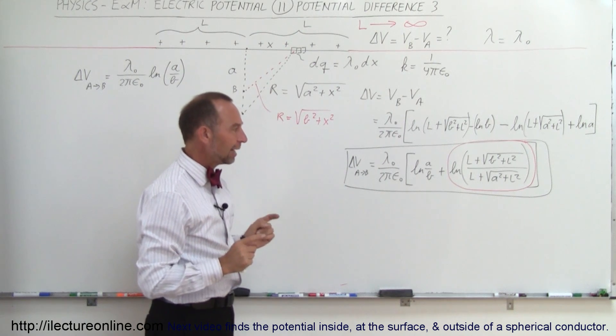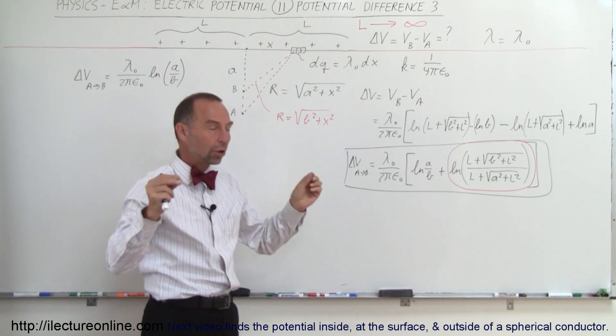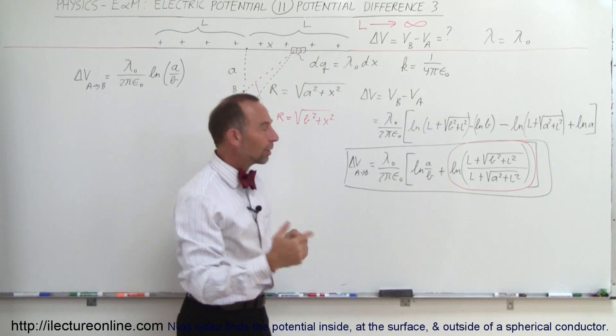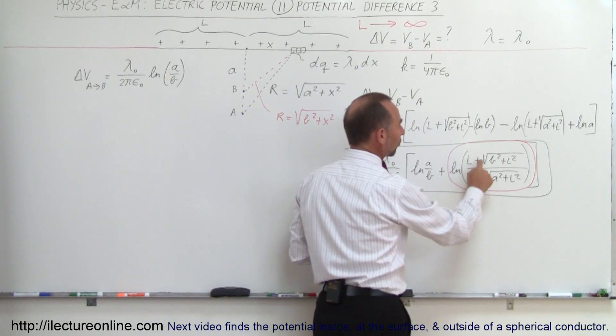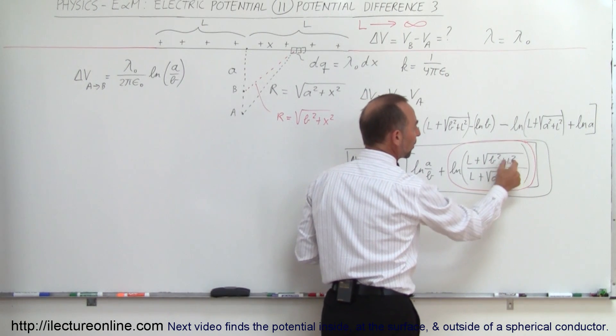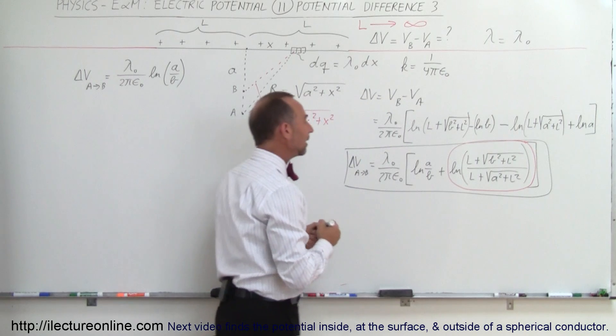Now, the question is, if we allow L to become larger, what will this term become? Notice as L becomes larger and larger, we have L plus the square root of B squared plus L squared. L will then be much, much bigger than B squared. And in the limit, in the limit, as L approaches infinity—